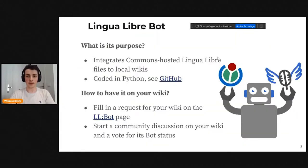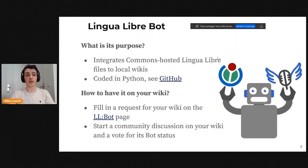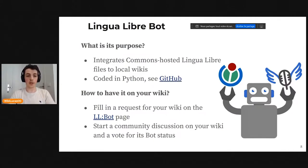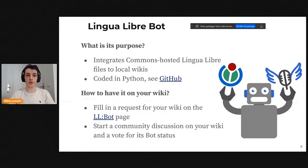This bot is called LinguaLibre Bot. It's coded in Python and you can see the code on GitHub. If you want it to work on your wiki, you just have to fill in a request on the LinguaLibre page. It will need bot status, so you will first have to start a discussion on your local wiki and vote for its status.